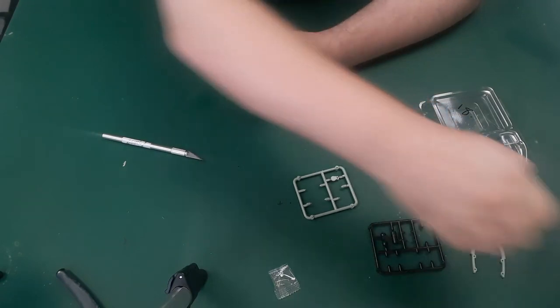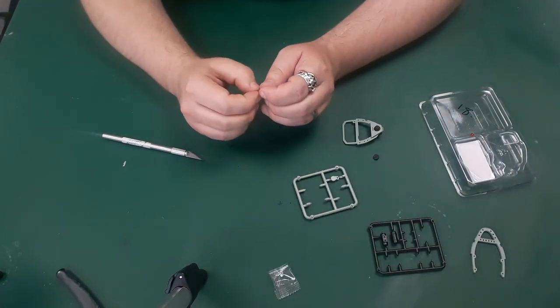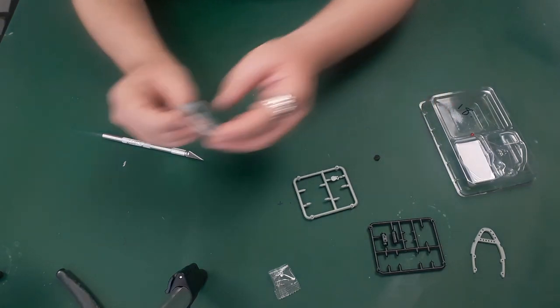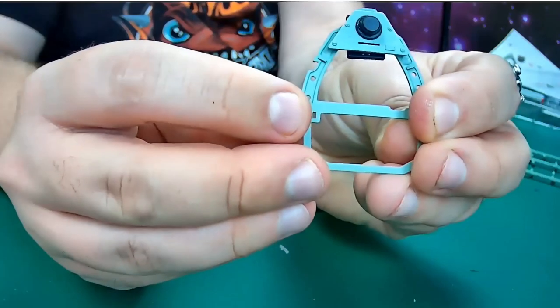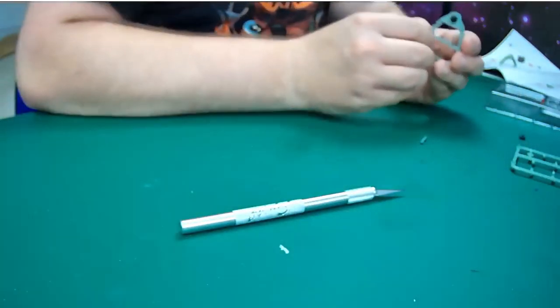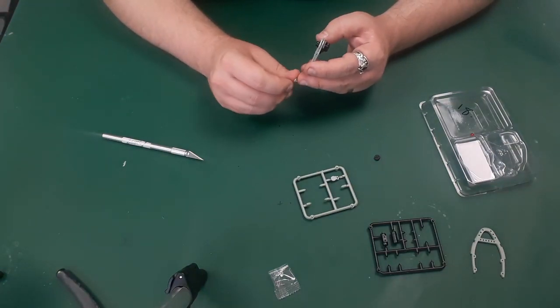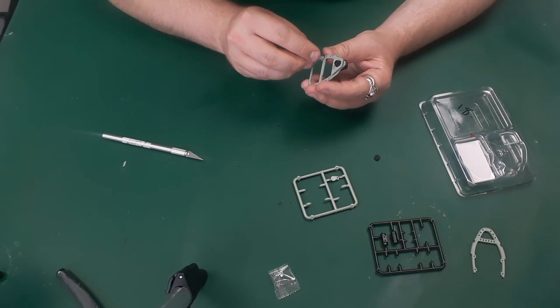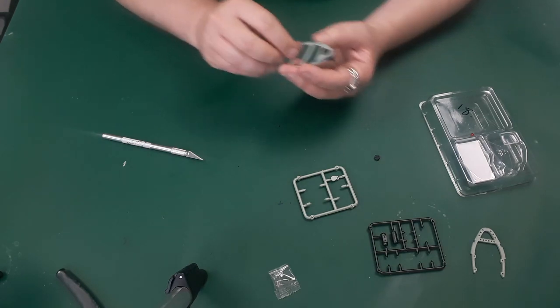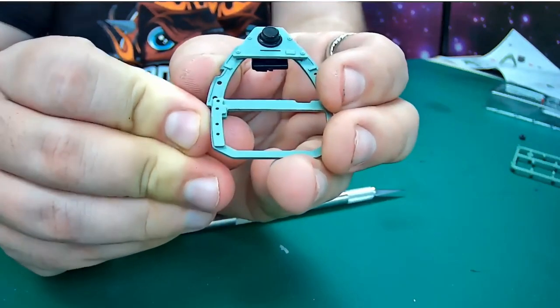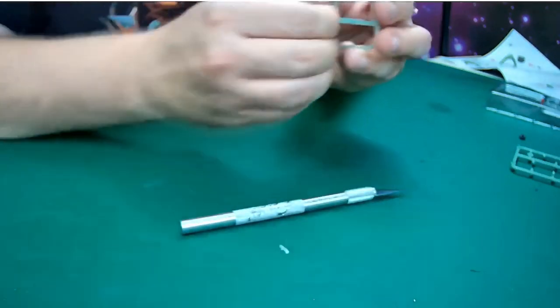Take the strut, which is this one here, 18.3, and identify the rectangular hole in the frame, which is that one just there. Check how the tab on part 18.3 fits in the hole. Fix in place with a little bit of glue.